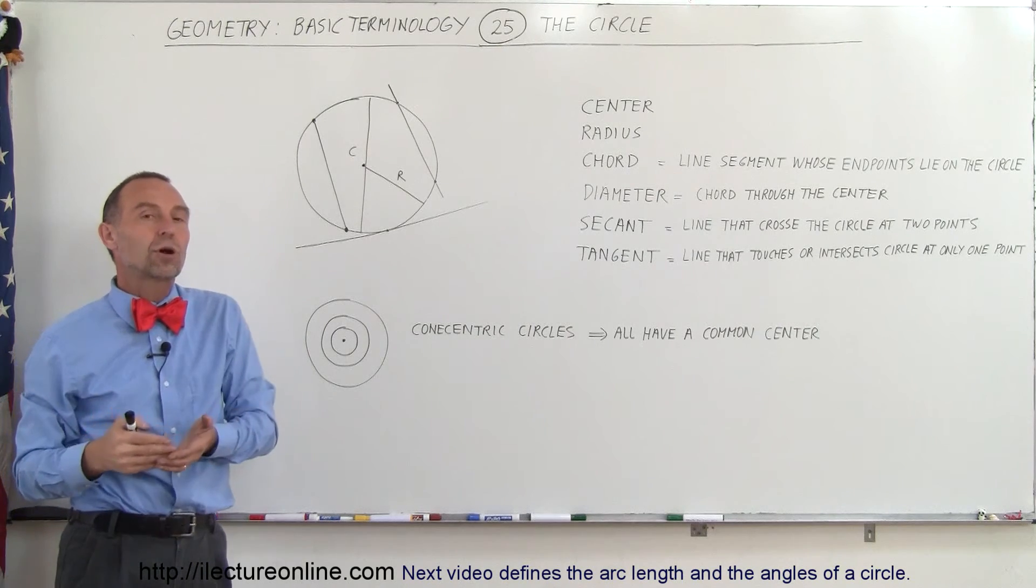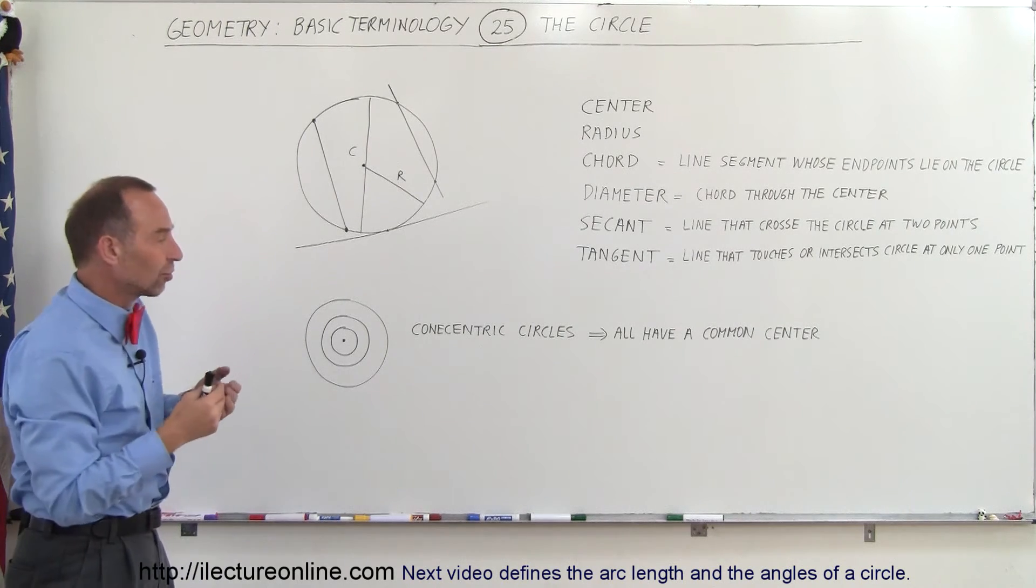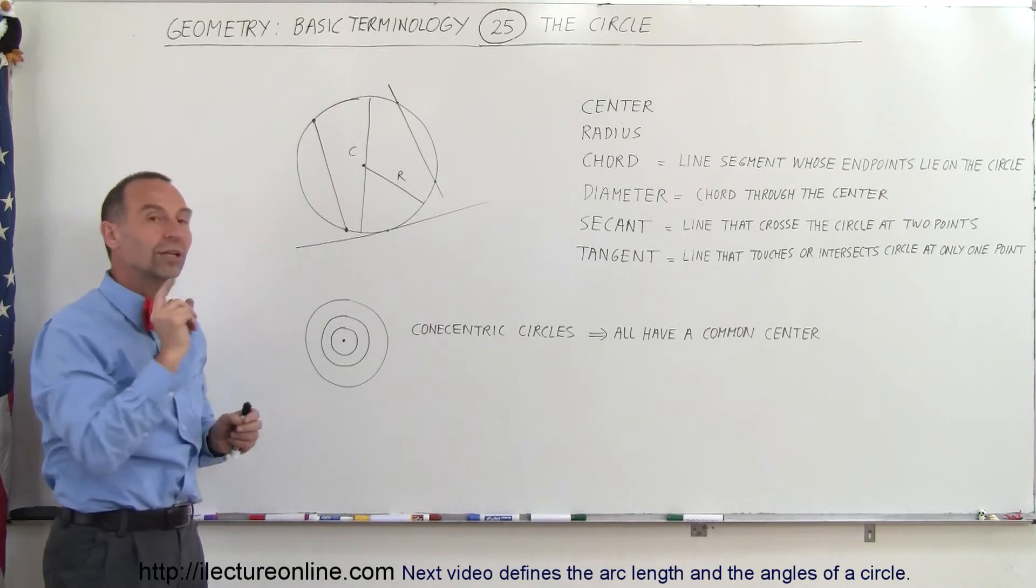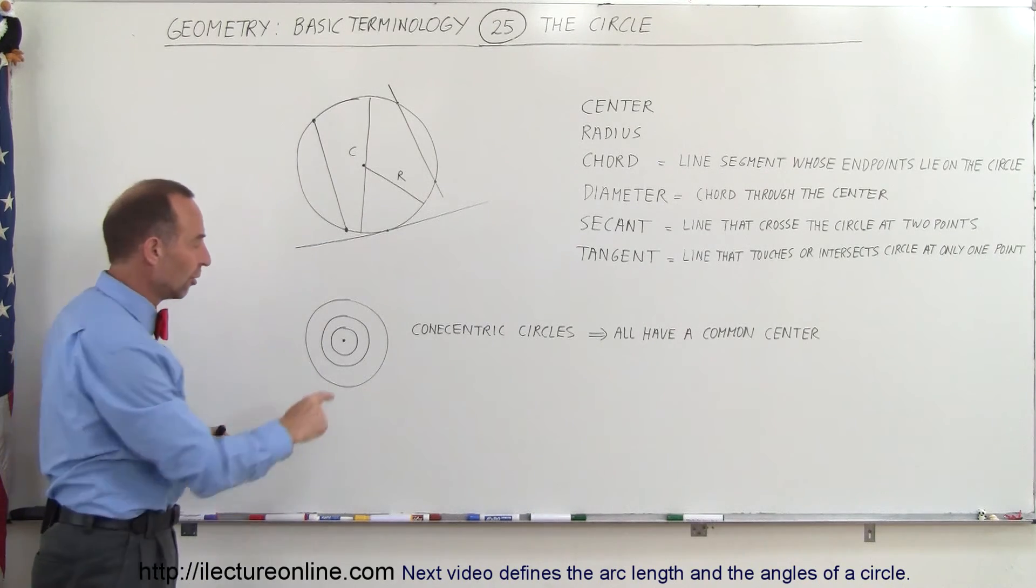Finally, we have what we call concentric circles. Concentric circles are more than one circle. All have one point in common, which is the center point. In this case,